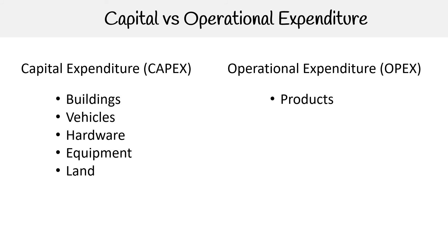For operational expenditures, that would be like the products you purchase, the business itself, or any systems. The key takeaway is capital expenditure is where you buy things outright, and OpEx is operational expenditures. This concept is the same thing as TCO, where we're just looking at the difference between who has ownership of what.